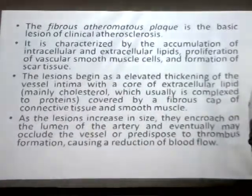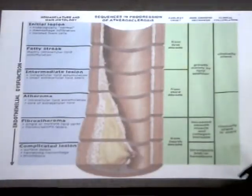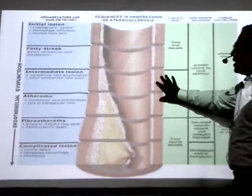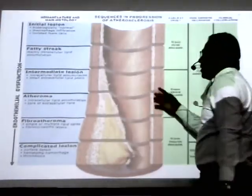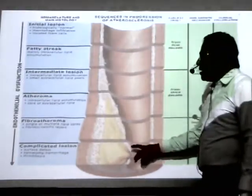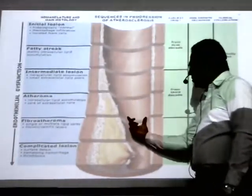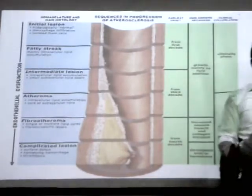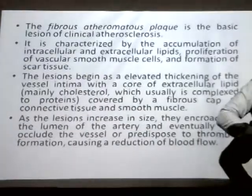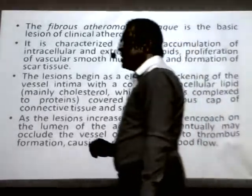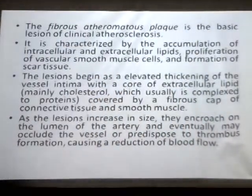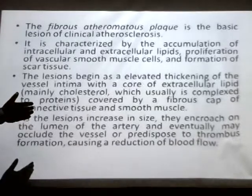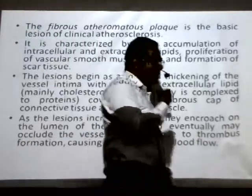As the lesion increases in size, it encroaches on the lumen of the artery and may eventually occlude the vessel. Looking at a cross-section of the artery, you can understand that this was the actual lumen. As the atheromatous plaque develops, the lumen of the artery gradually gets thinner, so the amount of blood passing through is reduced. There is a reduction in blood flow because the traveling of blood through the artery is occluded by the presence of the atheromatous plaque.